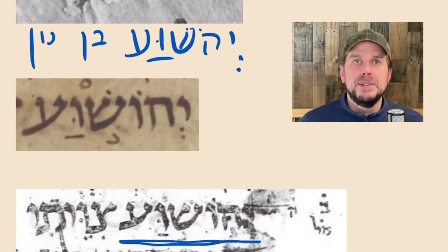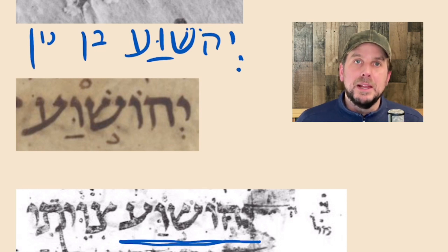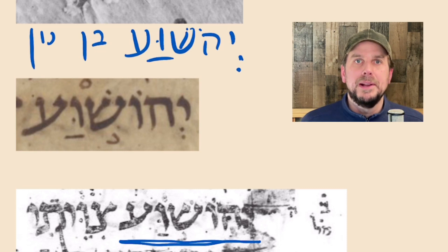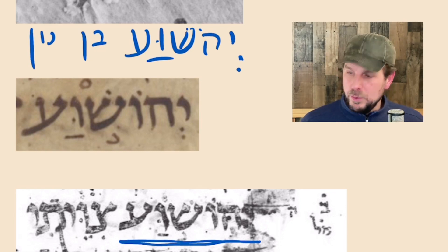The problem with teachers like that is they want to have the scribal tradition because that's where they get their scriptures — because without the scribes, they don't have anything. But then they don't want to actually pay attention to the scribes. They just want to pick and choose, and then behave as if they've stumbled across some revelation. So avoid those people.